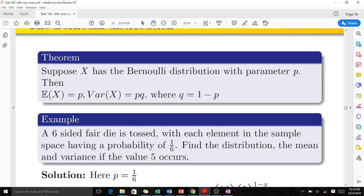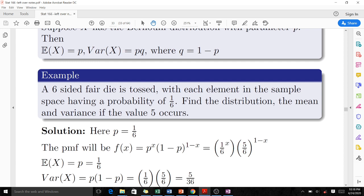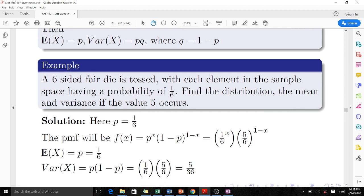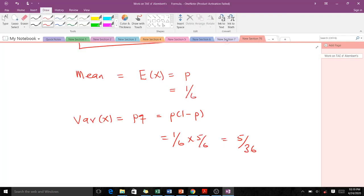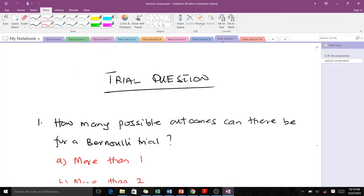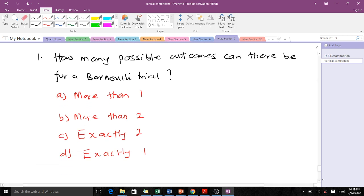That's all the question wants us to do. We can see the solution here: our p is 1/6, this is the pmf (the distribution), our expectation is this, and our variance is this. We are done with the Bernoulli. In our next video, we'll talk about the binomial distribution. But I have some simple questions for you to try on your own to make sure you understand. The first question: How many possible outcomes can there be for a Bernoulli trial? More than 1, more than 2, exactly 2, exactly 1. This should be simple—we have success or failure.